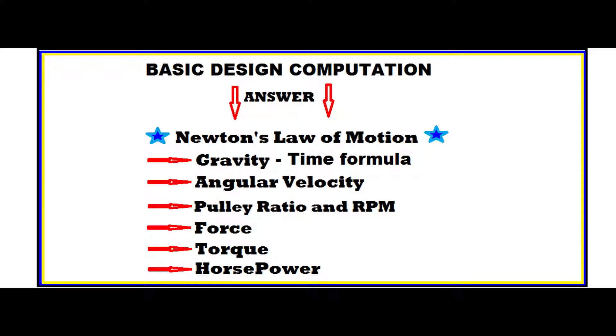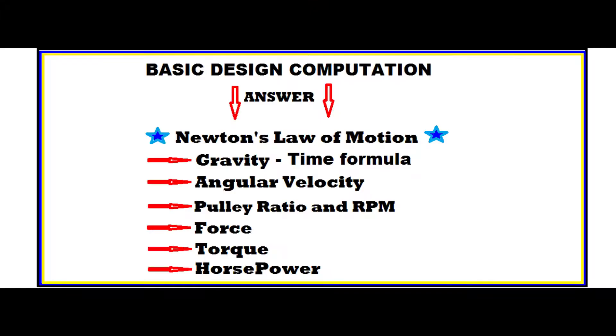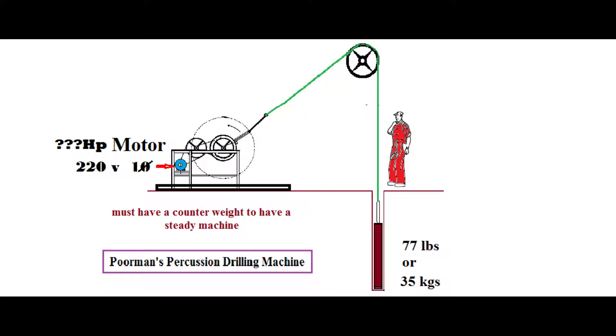There are a bunch of tutorials in YouTube teaching the power to torque relationship and its formula - very educational - but the only common application they have is piston. Maybe piston is complaining because he's tired already driving an automobile and then been always used in YouTube presentations which automobile industry will only benefit. But in this video you will see the actual application of gravity, RPM, pulley ratio, force, torque, and horsepower all in one in poor man's percussion drilling machine.